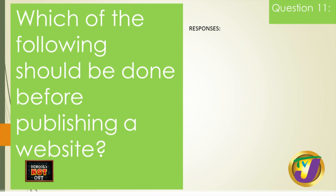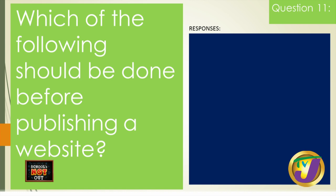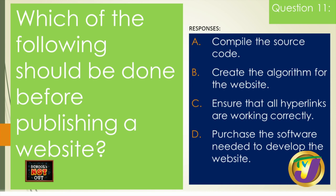Question eleven: which of the following should be done before publishing a website? A) compile the source code, B) create the algorithm for the website, C) ensure that all hyperlinks are working correctly, or D) purchase the software needed to develop the website. A is wrong — website code is not compiled, it's interpreted by a browser. B is wrong — you wouldn't be creating an algorithm right before publishing, and algorithms are for programs not websites.